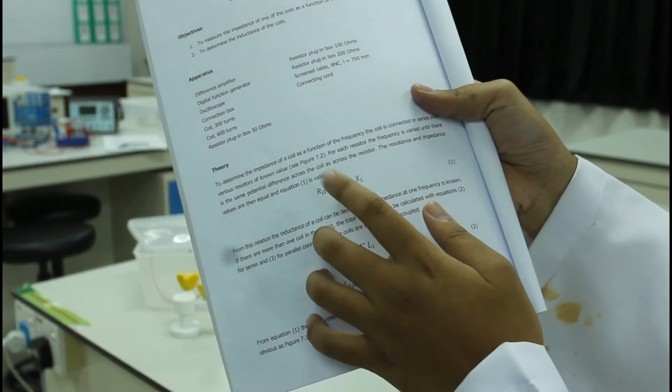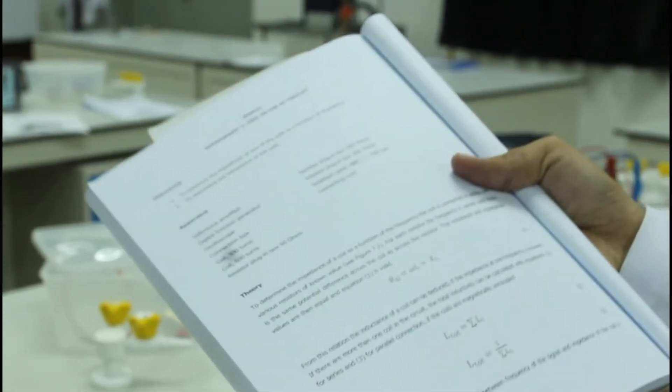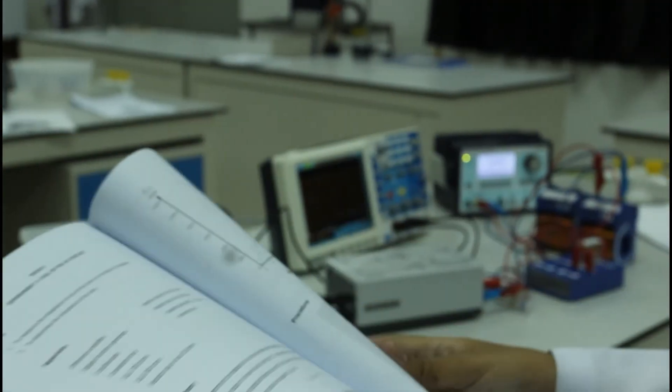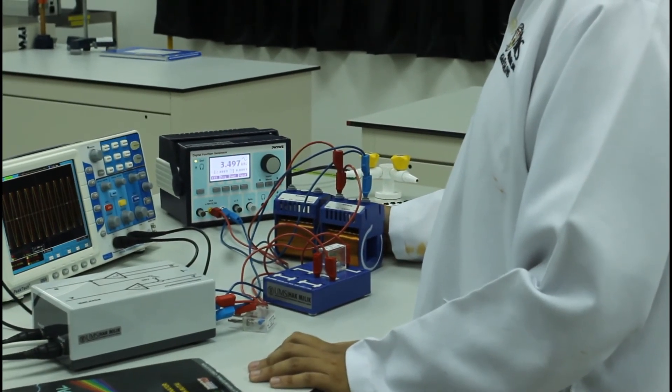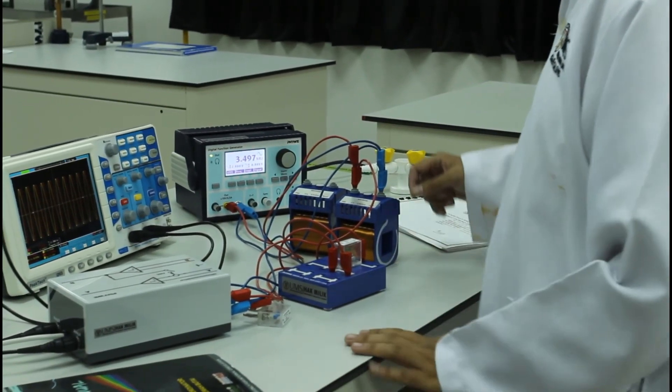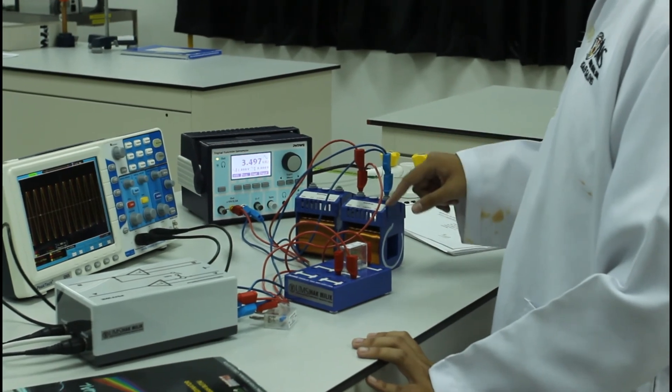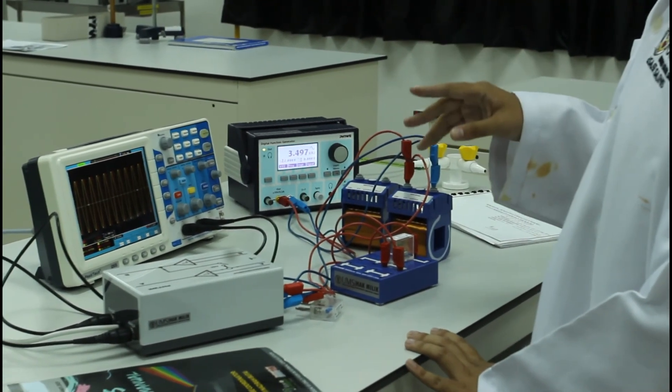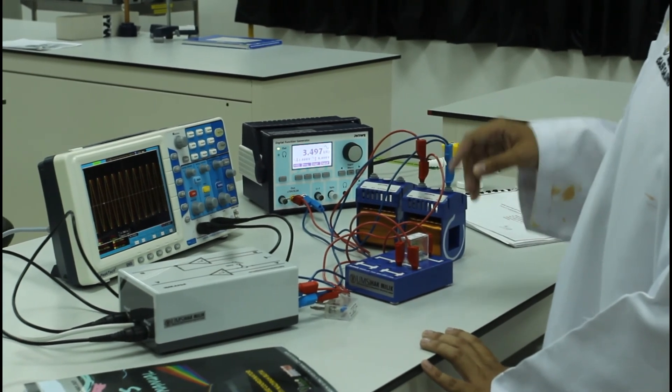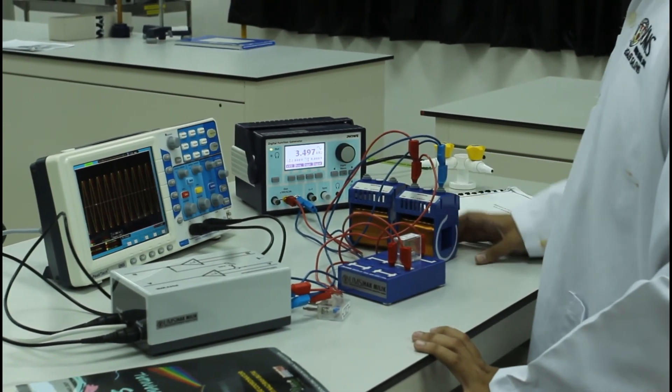After you get the value of L here, you will compare it with the actual value, which is 2 mH and 9 mH. You will calculate the percentage error by using these two as theoretical value and the calculated L as the experimental value. So that's all from me for today. Thank you.